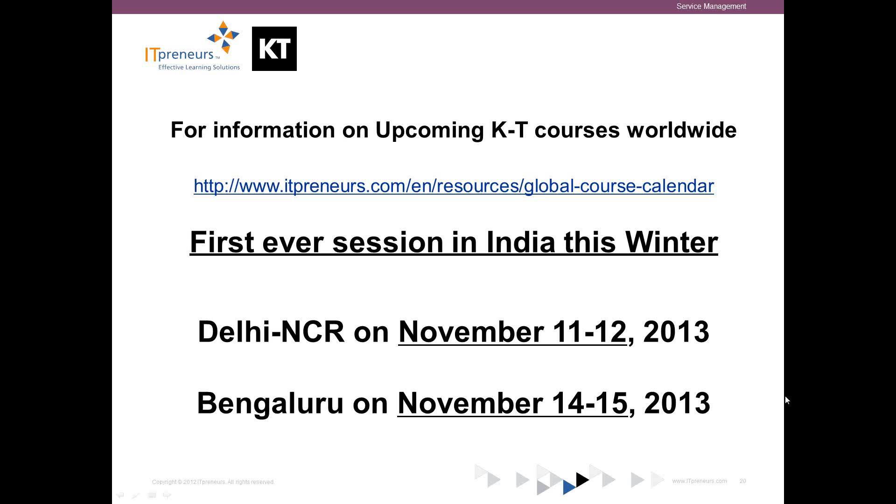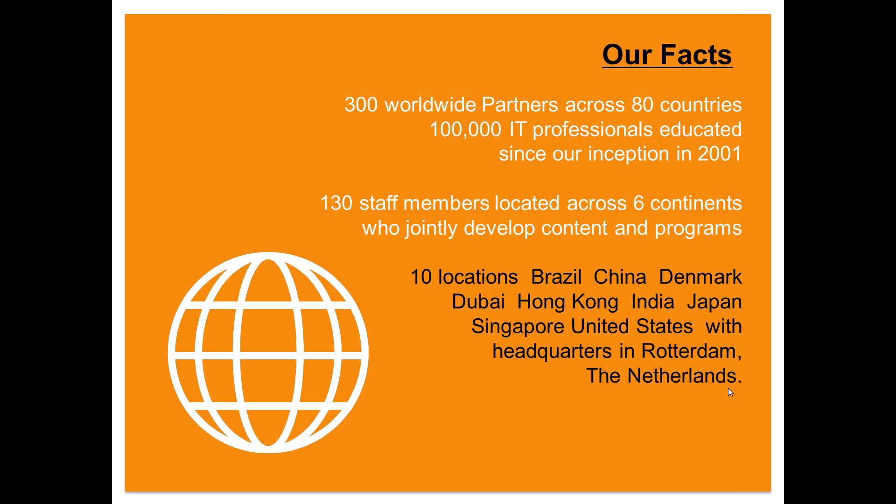Not only from a commercial perspective, but also from a value perspective. ITpreneurs is a worldwide company. Our main business is to develop courseware solutions based on worldwide accepted standards and frameworks. Our company is about 130 people, and we are across the whole world. Our head office is in the Netherlands, in Rotterdam, but we have a big development team in India. We have teams in Brazil, China, Denmark, Dubai, Hong Kong, Japan, and the United States — so all over the place.